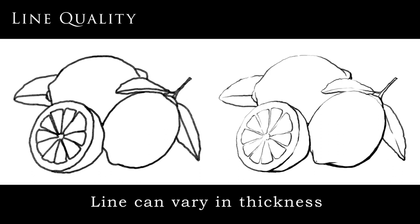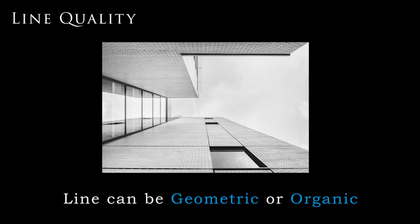Line has many different qualities. Lines can vary in thickness — they can be thin or thick. When a drawing uses only one quality of line it lacks dimensionality, as opposed to when it starts to vary in its qualities. Line can also be geometric or organic.